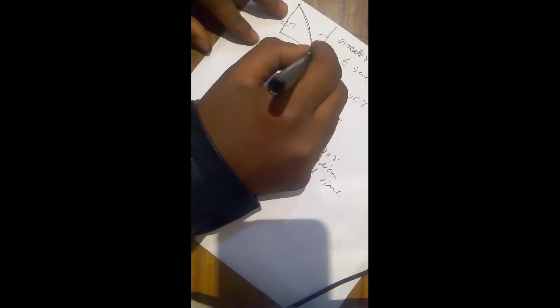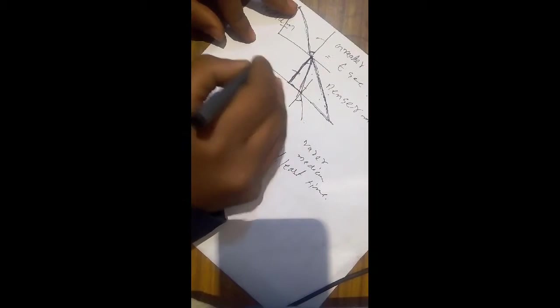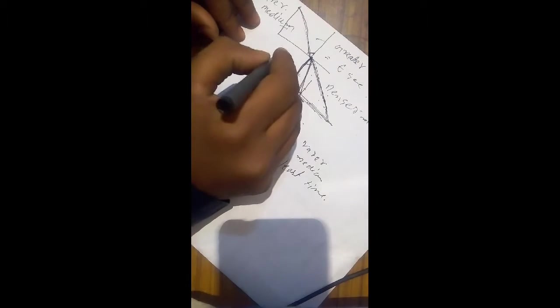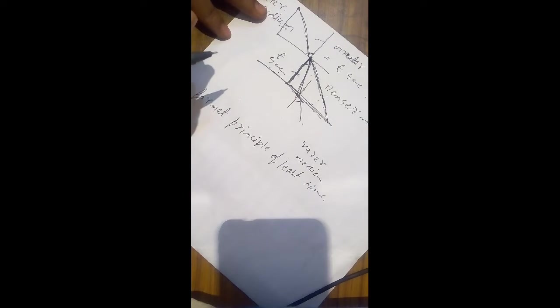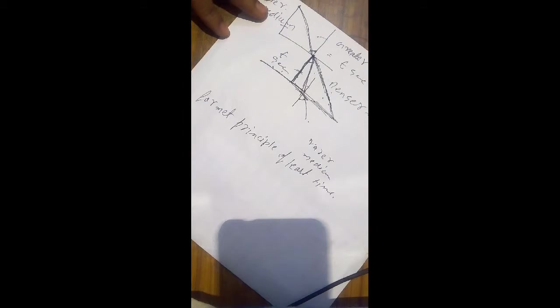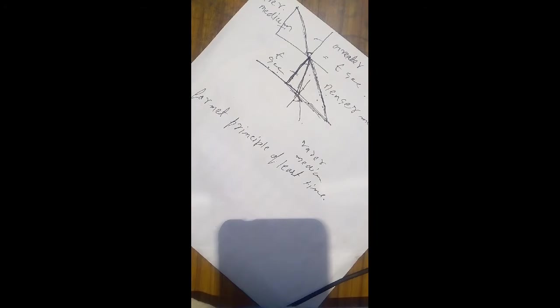It bends toward normal to travel this distance in the same t seconds. Hence, light wants to travel the same distance in the same interval of time, so it prefers a shorter distance in the denser medium and a greater distance in the rarer medium, because in the rarer medium the speed of light increases.